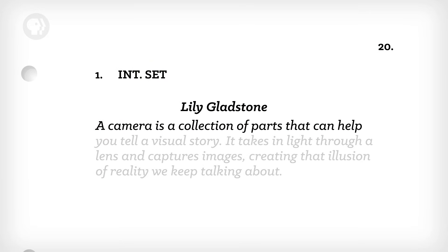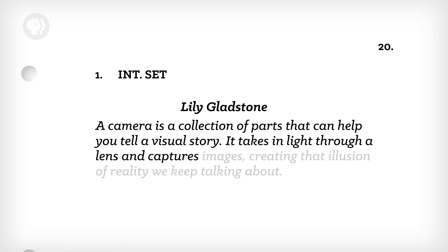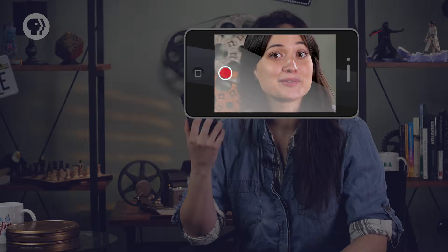A camera is a collection of parts that can help you tell a visual story. It takes in light through a lens and captures images, creating that illusion of reality we keep talking about. You could even use your cell phone camera to make a movie, but filmmakers usually have equipment that gives them a lot more control. So let's look through the eyes of a cinematographer, and see how they combine camera technology and the language of film to get that perfect shot.